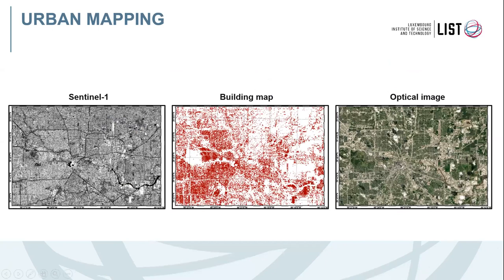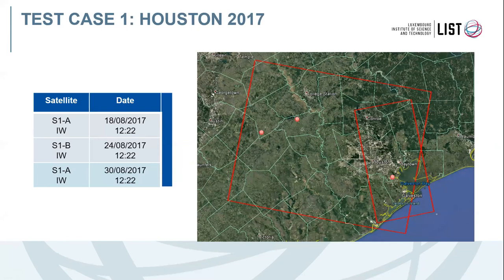Here is an example of how a building map from Sentinel-1 data looks. This is an image from the Houston area. It is quite challenging because there is a lot of vegetation and the buildings are quite small relative to the 20-meter resolution of the data. Here is the building map extracted from Sentinel-1 data alongside the optical image.